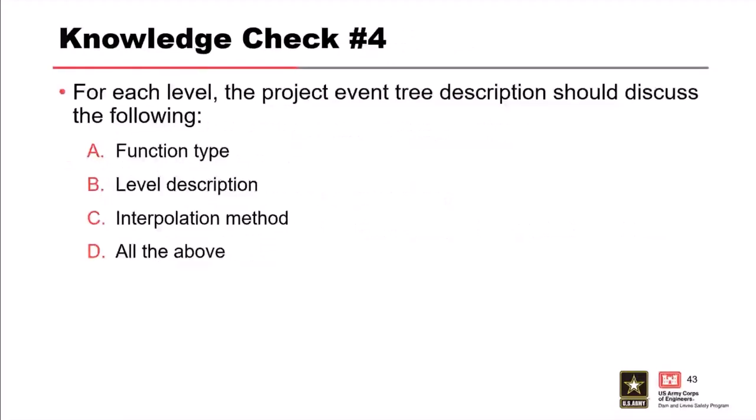Knowledge check four: For each level, the project event tree description should discuss: function type, level description, interpolation method, or all of the above? The correct answer is D—all of the above. Each level of the event tree description needs to discuss all of those items.